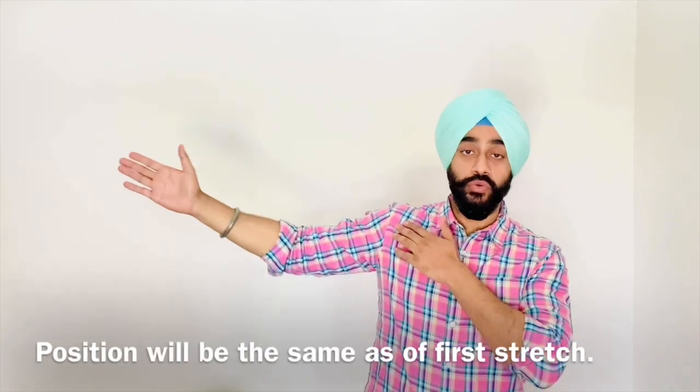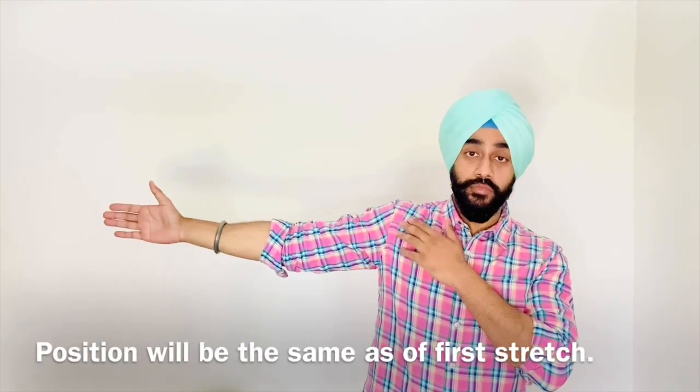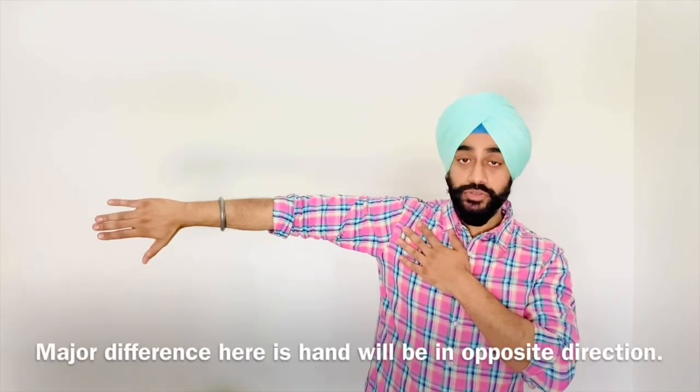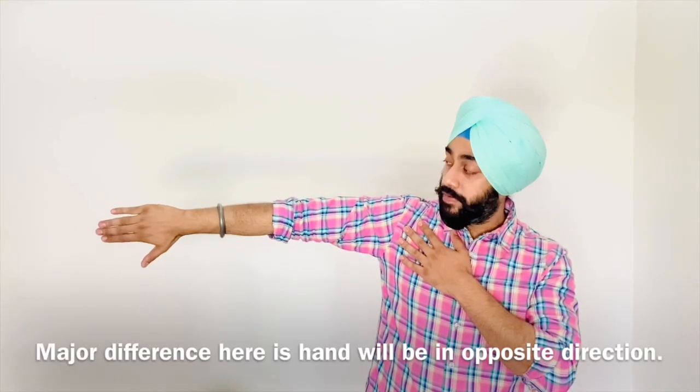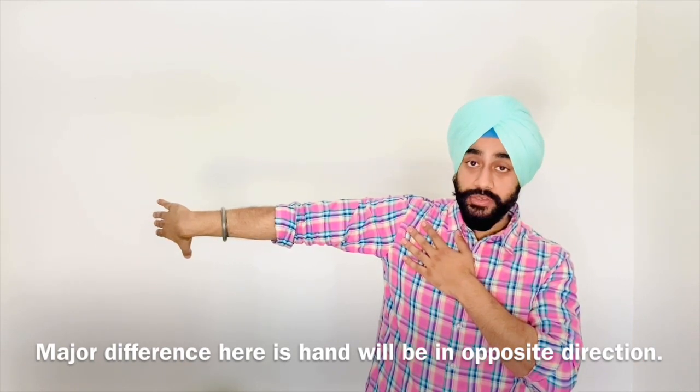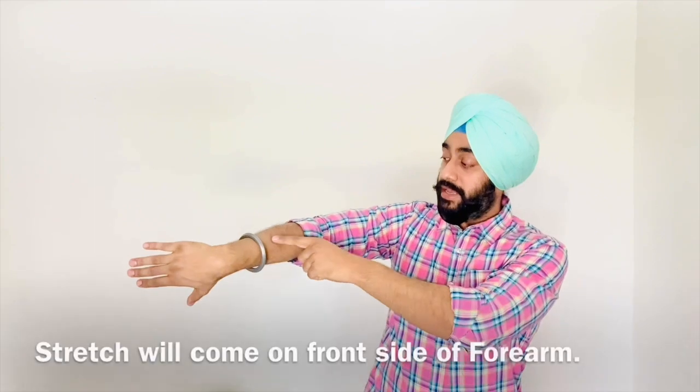In the second stretch, the position will be the same, shoulder again in this position. But the difference here is you have to move your hand in this manner and now we will move our hand backwards. So now you will feel the stretch over this area of forearm.